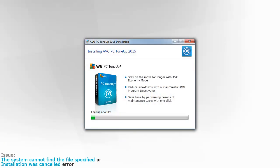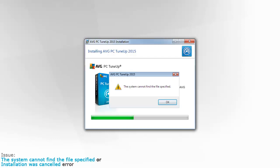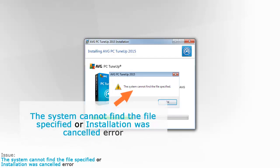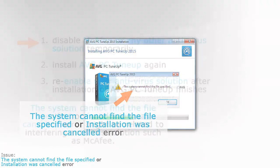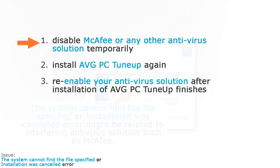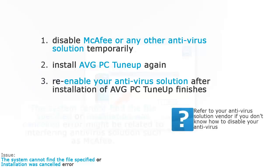In case you're experiencing issues while installing AVG PC TuneUp, particularly the error 'the system cannot find the file specified' or 'installation was cancelled', try to temporarily disable McAfee or any other antivirus solution, then install AVG PC TuneUp again, and when the installation finishes, re-enable the antivirus solution. Please refer to your antivirus solution vendor if you don't know how to disable the antivirus.